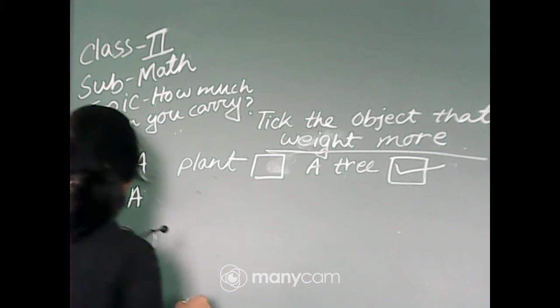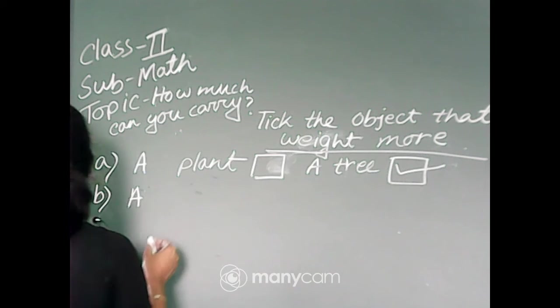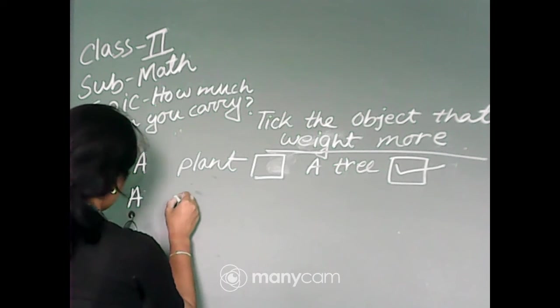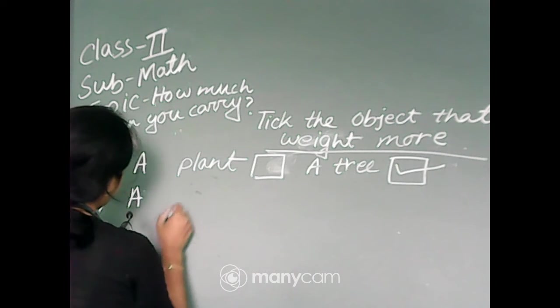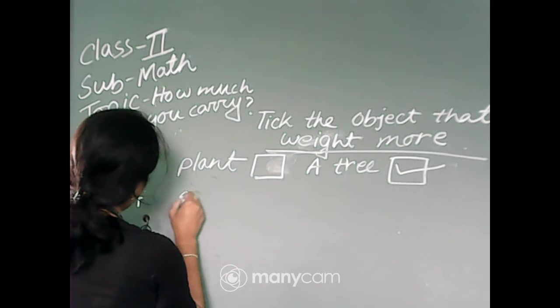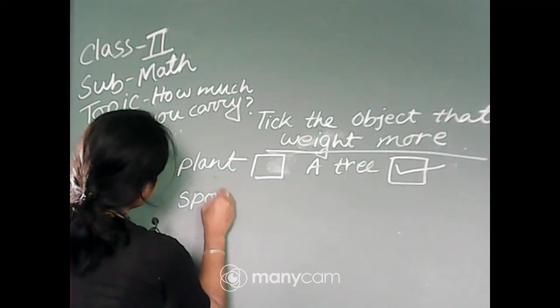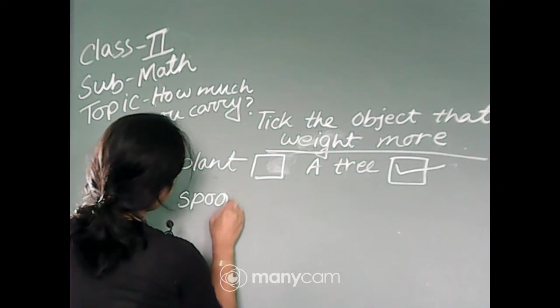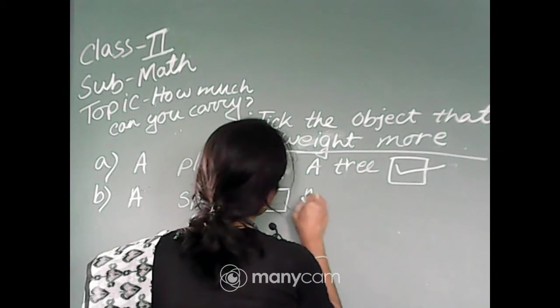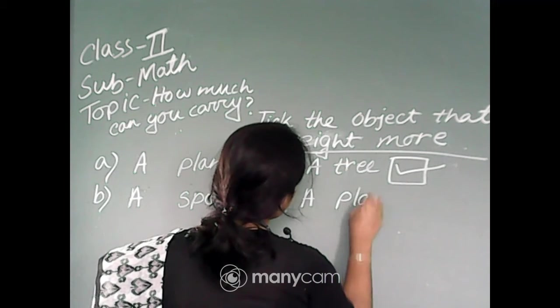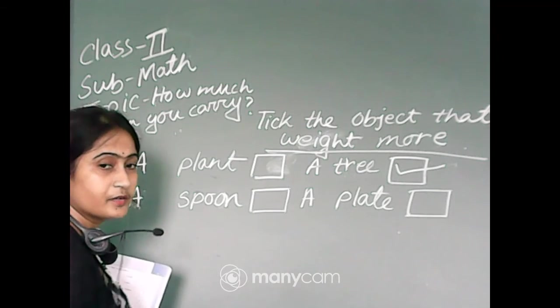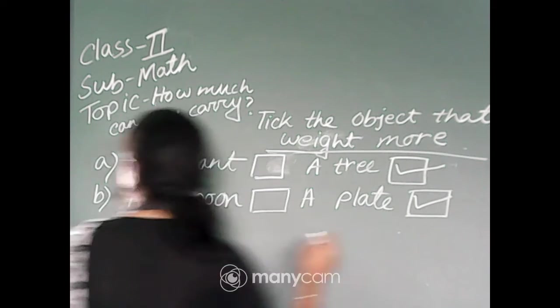Number B: a spoon or a plate. Spoon or plate, which object weighs more? Plate, so tick plate.